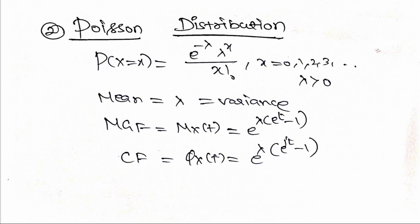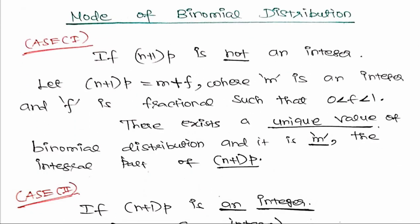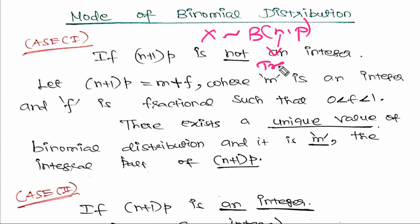This covers all the key formulas: mean, variance, MGF, and mode. The binomial distribution is a two-parameter distribution, denoted X ~ B(n, p), where n is the number of trials and p is the probability of success.